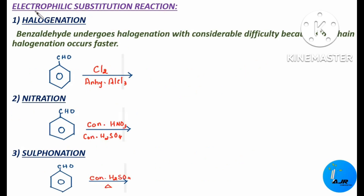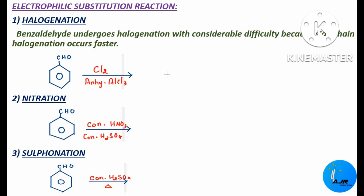The next important reactions are the electrophilic substitution reactions taking place in benzaldehyde. The first one is halogenation. Benzaldehyde undergoes halogenation with considerable difficulty because side chain halogenation occurs fast. This undergoes chlorination in the presence of anhydrous aluminium chloride.